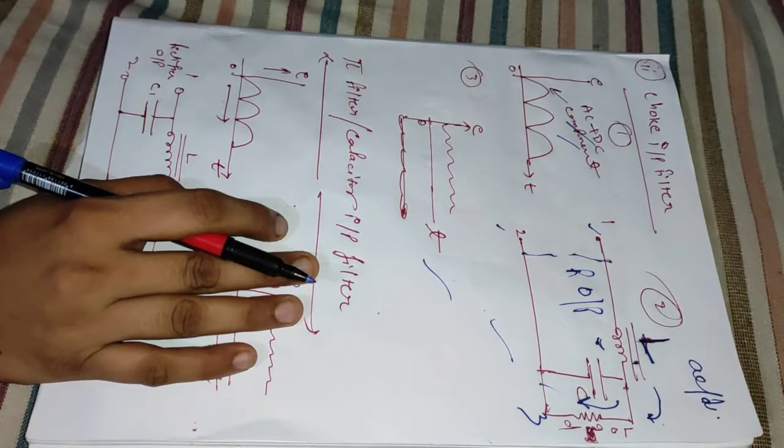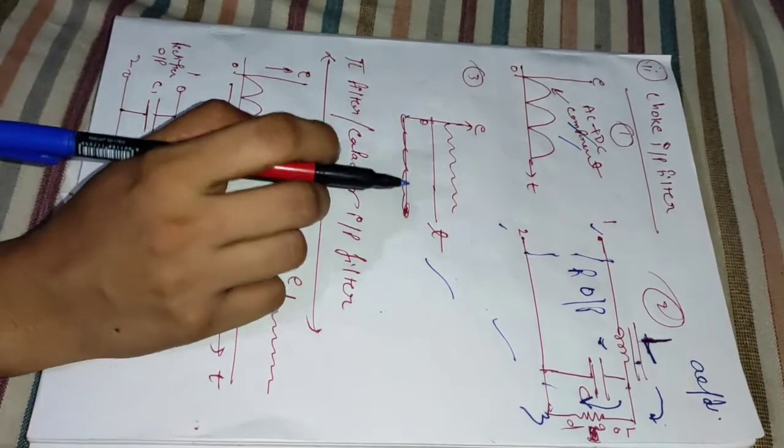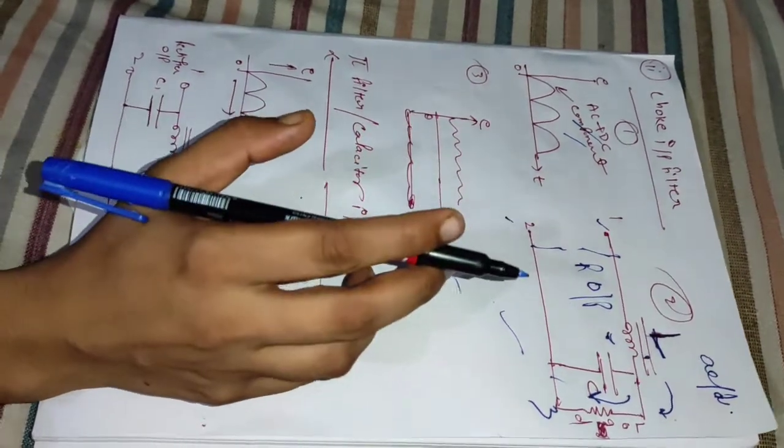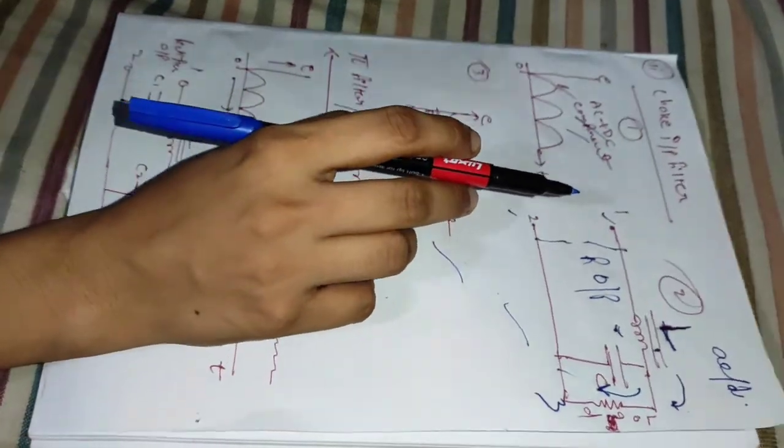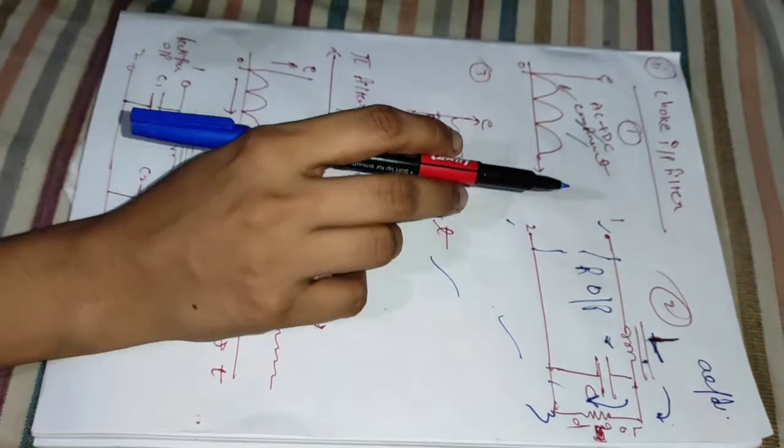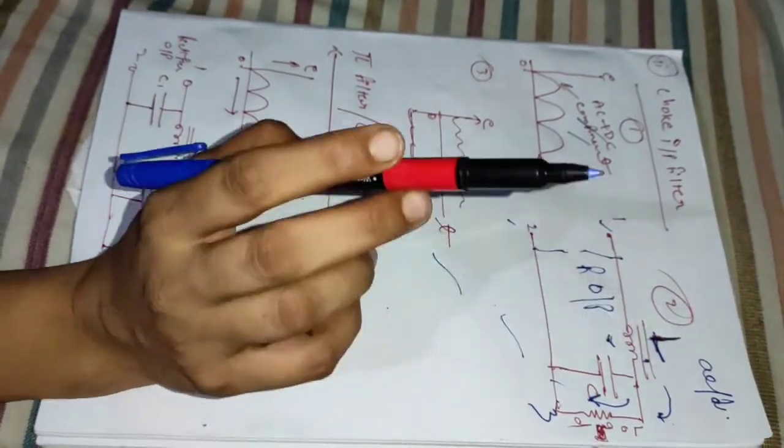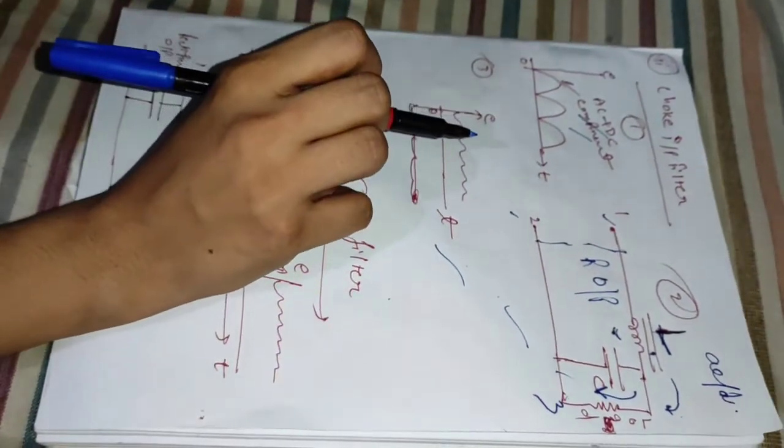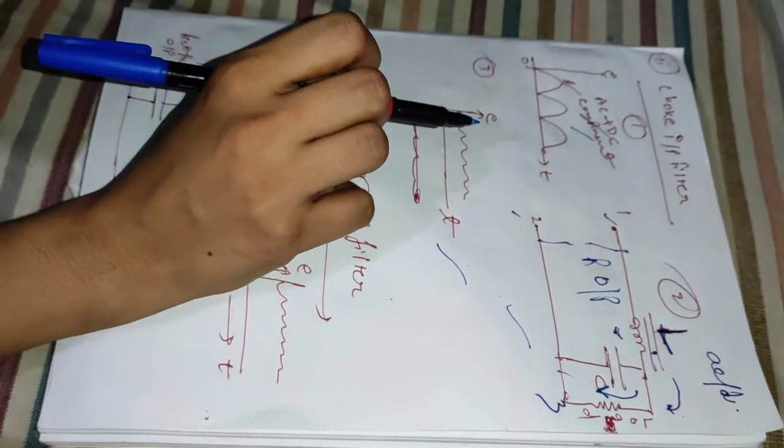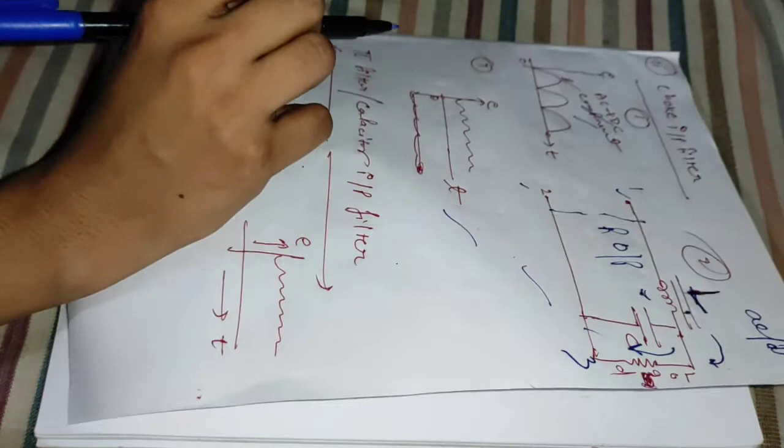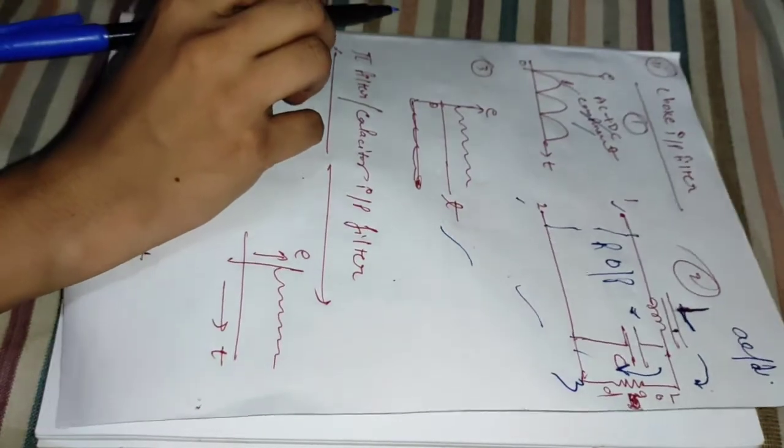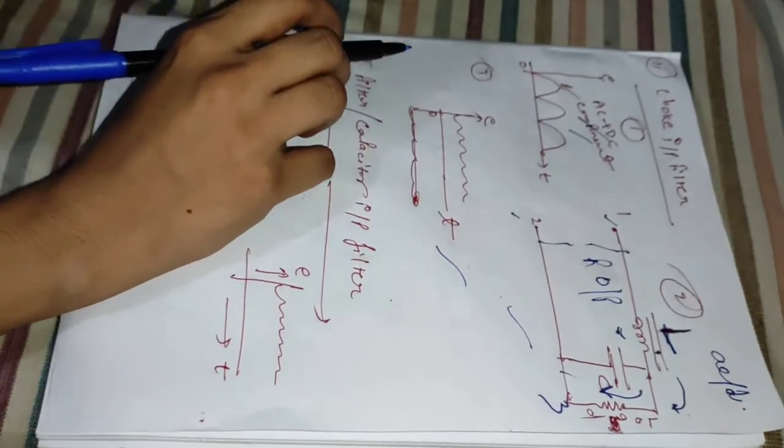Now the low reactance of the filter capacitor bypasses the AC component but prevents the DC component from flowing through it. Therefore, only the DC component is allowed to reach the load.